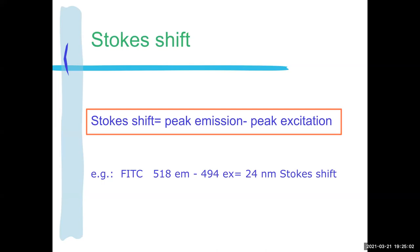The Stokes shift is the difference between the two — the difference between peak emission and peak excitation. So you just subtract: for FITC, 518 minus 494 equals 24 nanometers. That is the Stokes shift of FITC. Every fluorophore has a characteristic excitation wavelength that works for them and a particular emission wavelength — the light they produce after absorbing the other color. The difference between those two colors is the Stokes shift.